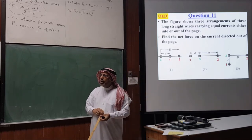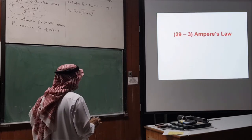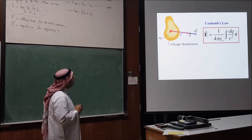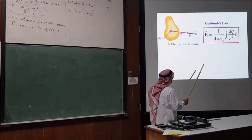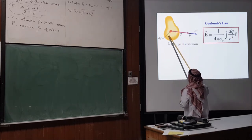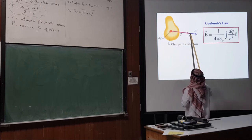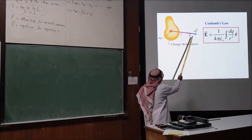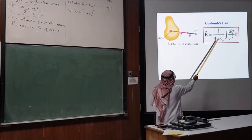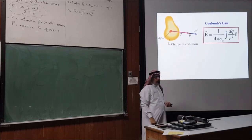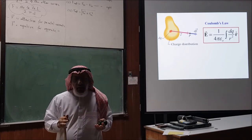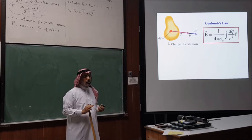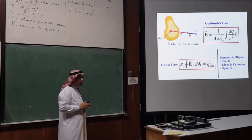We now move to the second topic: Ampere's law, a very important law in electromagnetism. In electricity, the basic law to calculate the electric field is Coulomb's law — you divide an object into small charge elements dQ, find the field due to each, and integrate. But this can become very difficult, so Gauss's law came to our rescue, using symmetry to simplify calculations for sheets, cylinders, and spheres.